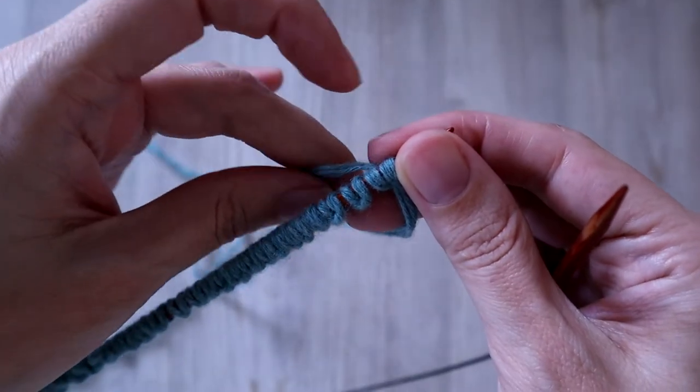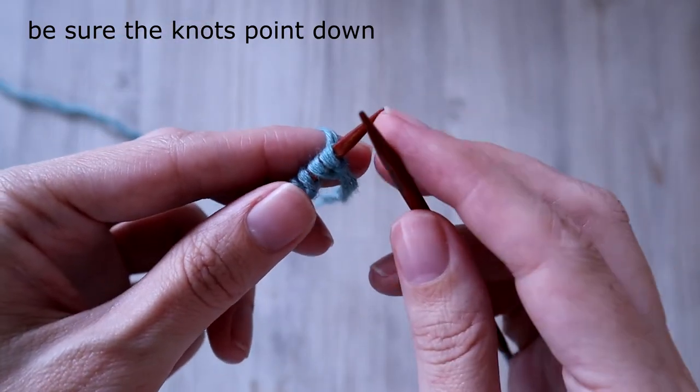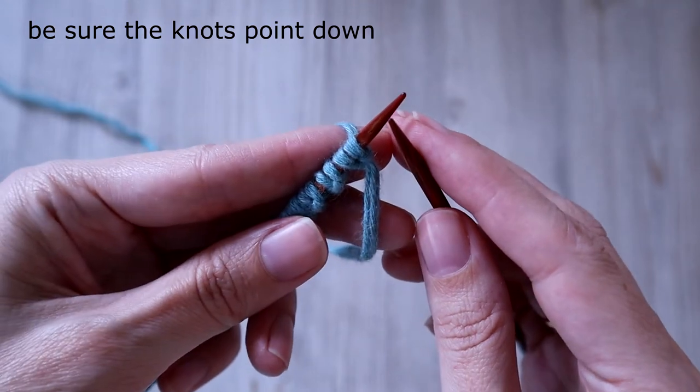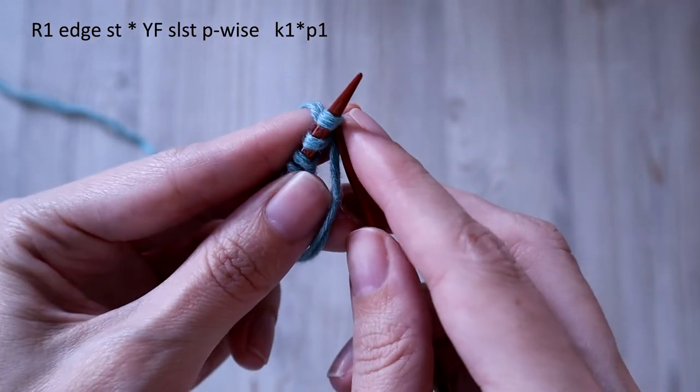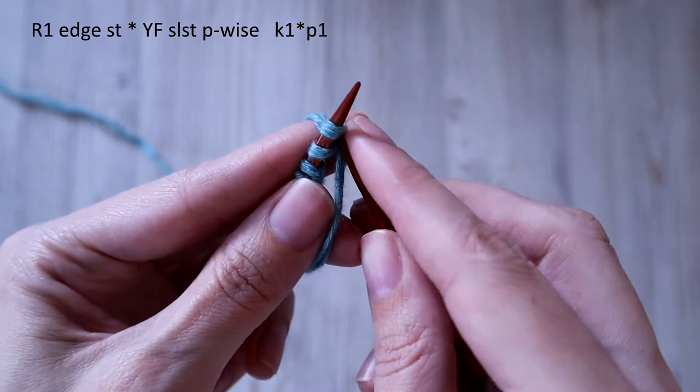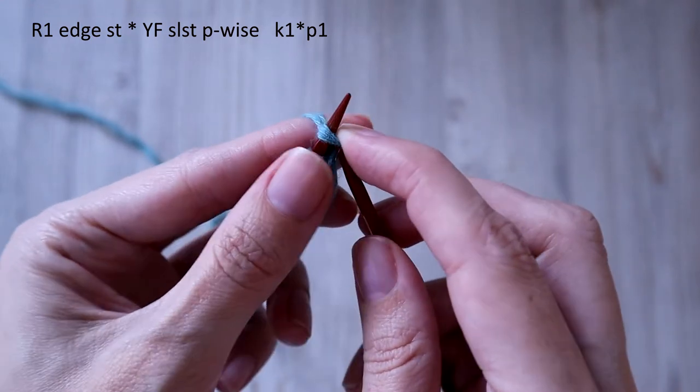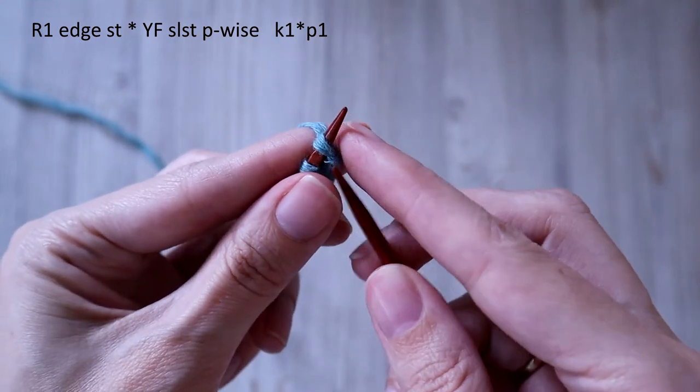The first row and the first stitch knit stitch. In this row, to the next row it's knit stitch slip stitch. Knit purl. This stitch knit stitch.